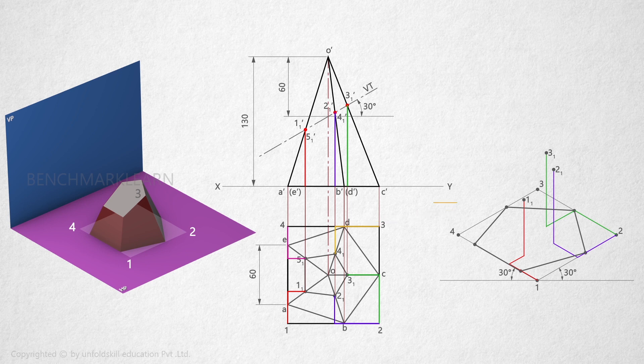Take the horizontal distance of 3-1 and mark on the isometric view. Measure the height and mark on the vertical drawn from the point to get 4-1. Take the horizontal distance of 5-1 and mark similarly.